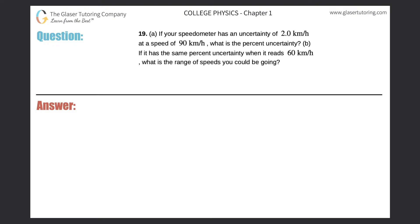Number 19 letter A: If your speedometer has an uncertainty of 2.0 kilometers per hour at a speed of 90 kilometers per hour, what is the percent uncertainty? First thing I notice is that there is a little bit of ambiguity between the significance of the uncertainty and the significant figures found in the speed.